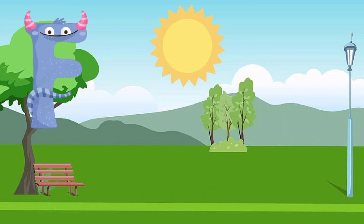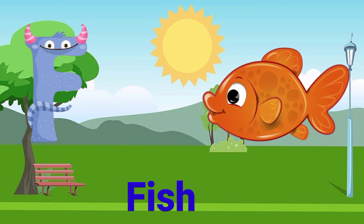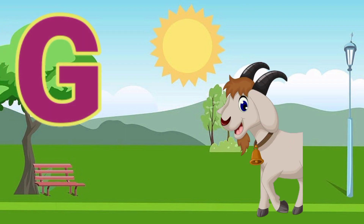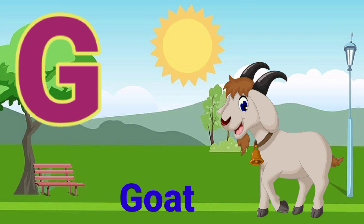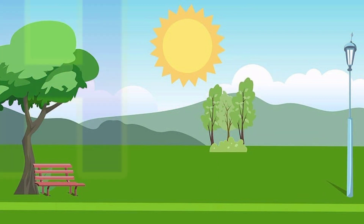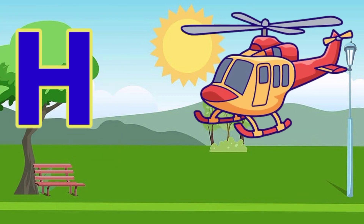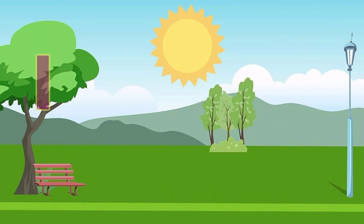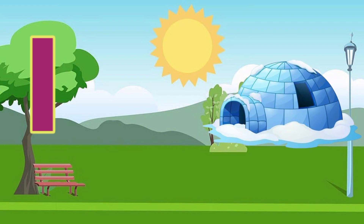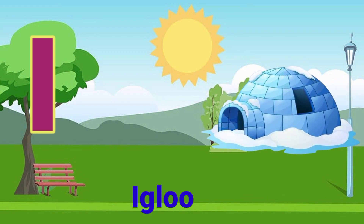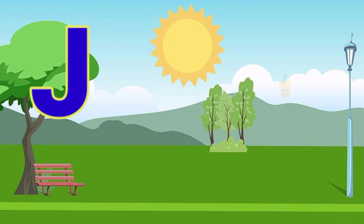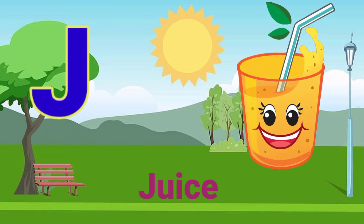F. F for fish. G. G for goat. H. H for helicopter. I. I for igloo. J. J for juice.